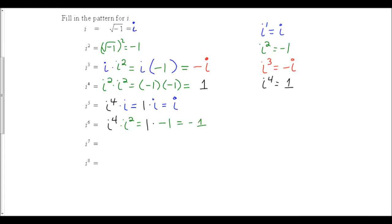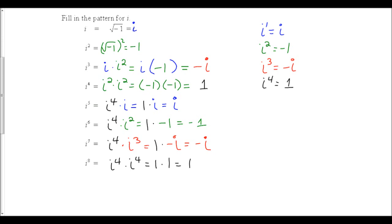For i to the seventh: I can get one group of i to the fourth, and I also have i to the third left to make a total exponent of 7. i to the third is negative i, so I have 1 times negative i, which is negative i. For i to the eighth: I can get two i-to-the-fourths, so I have i to the fourth times i to the fourth, which is 1 times 1, or just 1.